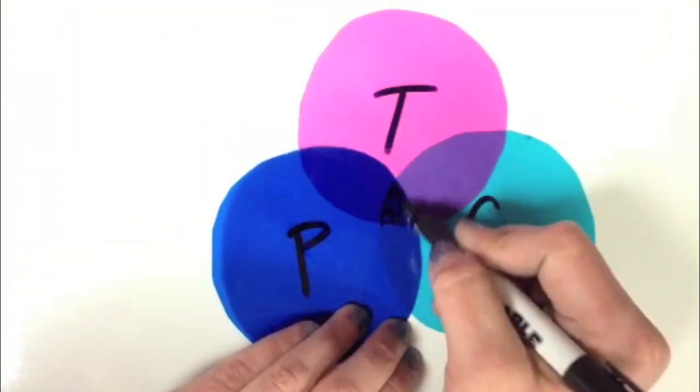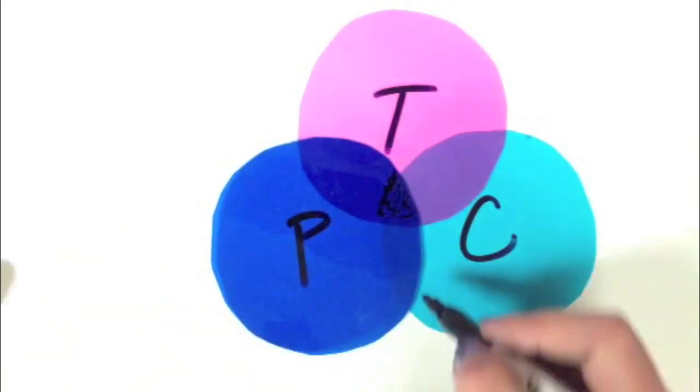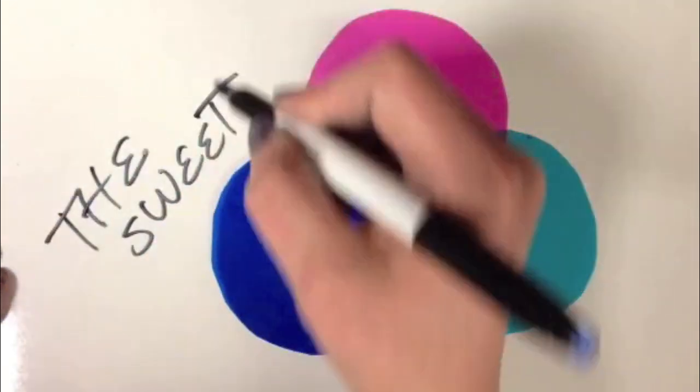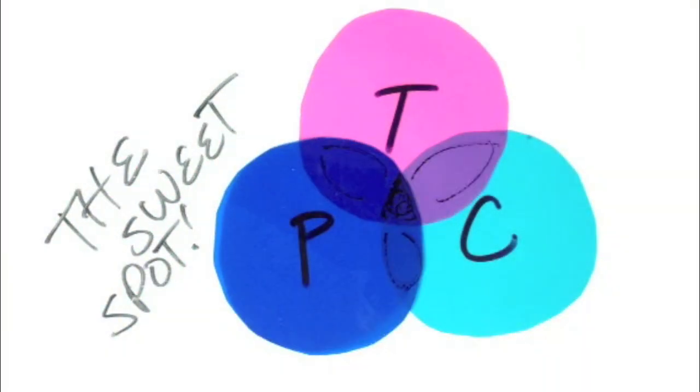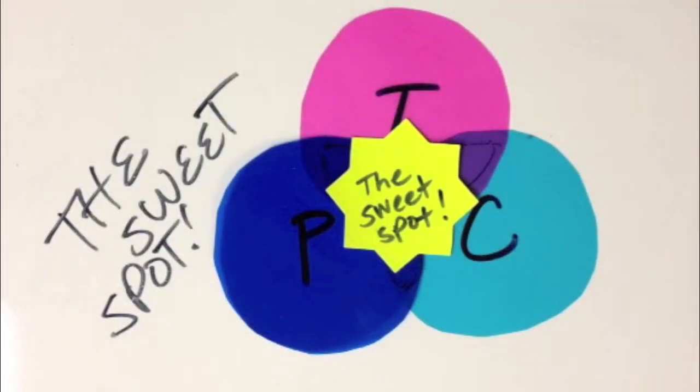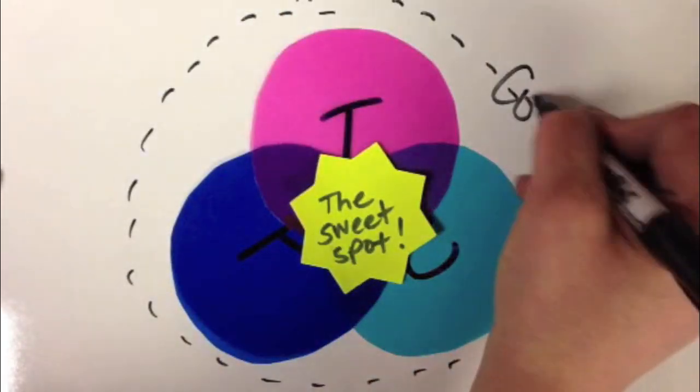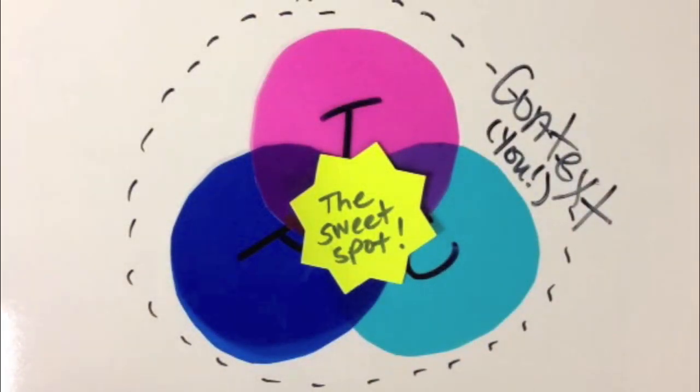TPAC comes from the overlapping and that center spot, or as we refer to it as the sweet spot, when all three knowledge areas work together. It's crucial to remember that surrounding this is the context that's you and your students. This may look differently when you walk into classrooms, because at the heart of TPAC is meeting students' needs.